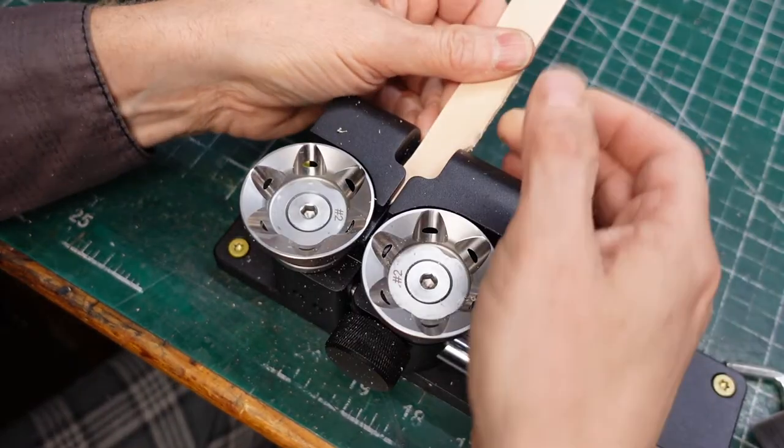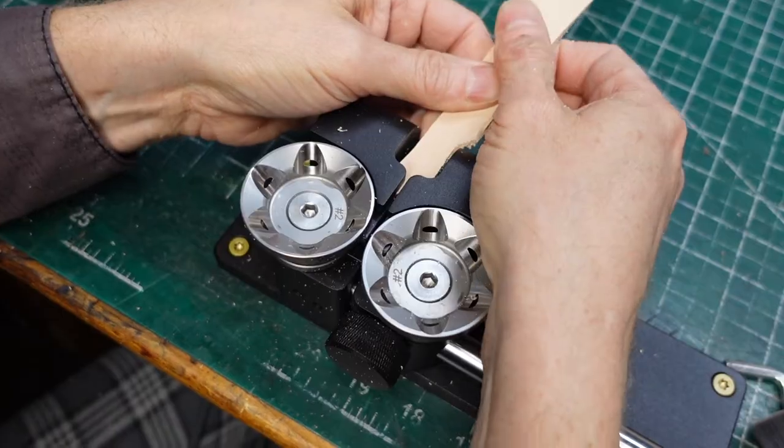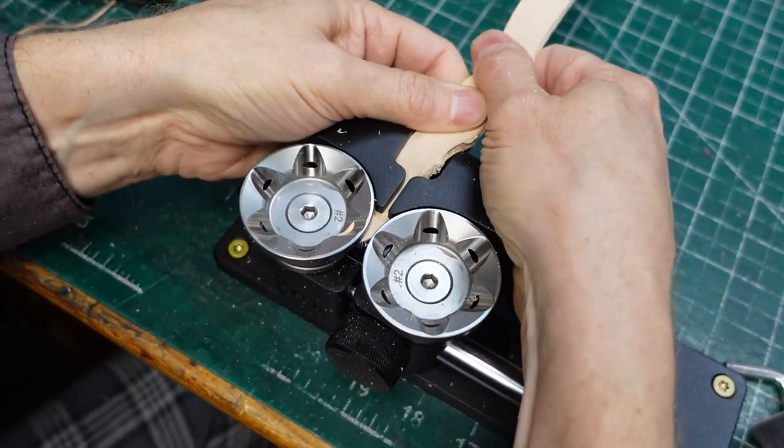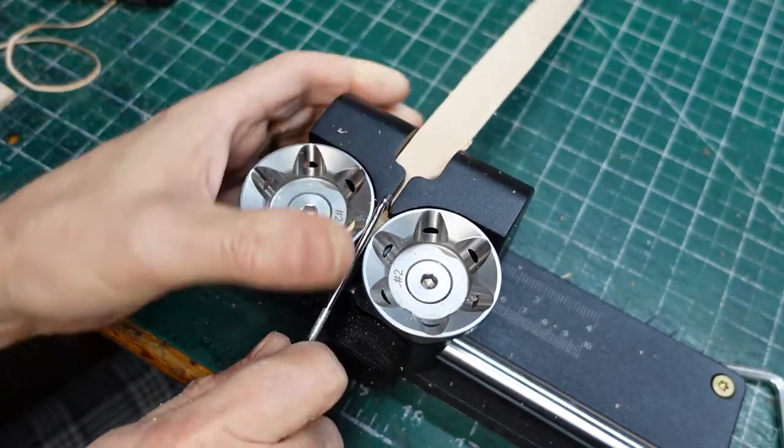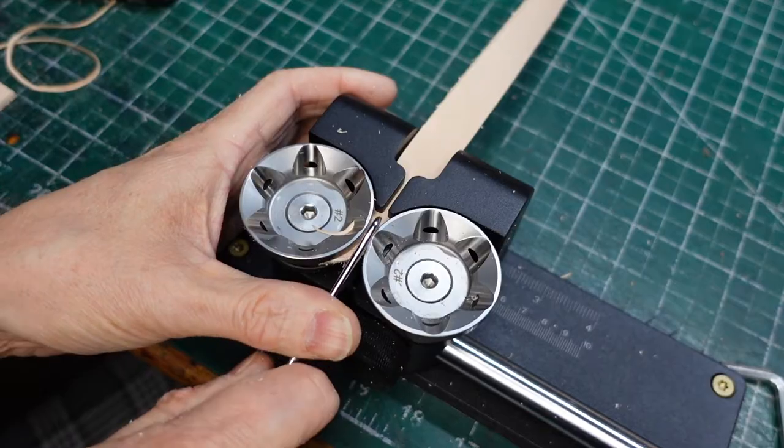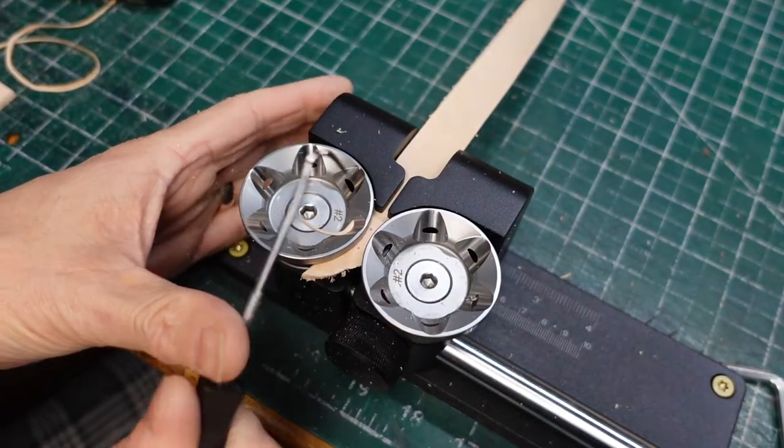The leather I'm using is relatively pliable. To get it started, the machine comes with a hook to reach in between the blades to get it started. If this was a finished piece, I would hook it from below, but since I cut this strap long, I'm just going to hook it from the top.